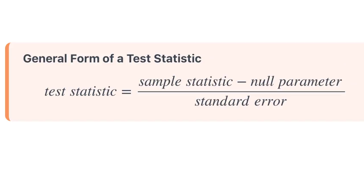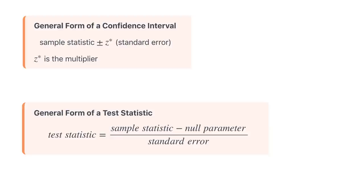The general form of a test statistic is the sample statistic minus the null parameter divided by the standard error. This week, we are working with one sample. The sample statistic could be the proportion or the mean in the sample. The null parameter is the value in the null hypothesis — you could also call this the hypothesized population parameter. The standard error in Lesson 7 we found on a randomization distribution, but this week we will compute it using formulas.